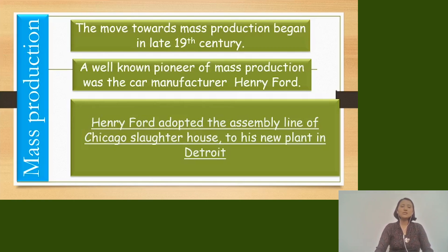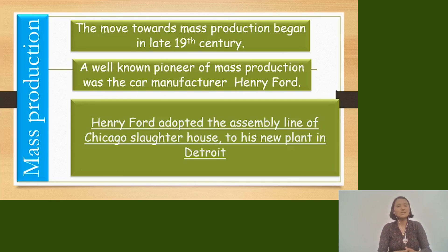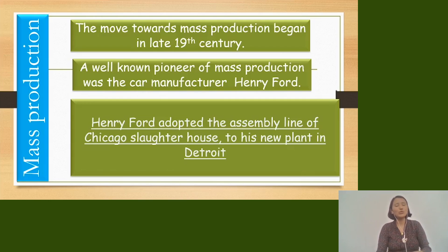Mass production means the production of goods in a very large number. This mass production started in the late 19th century. A well-known pioneer of mass production was the car manufacturer Henry Ford.